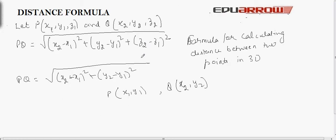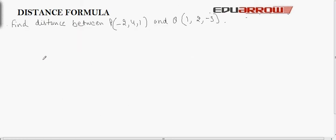Now let us see one example based on this formula. In this question we have to find out the distance between two points P and Q, whose coordinates are given as P(-2, 4, 1) and Q(1, 2, -3). So here x1 is equal to -2, y1 is equal to 4, z1 is equal to 1.